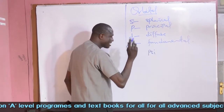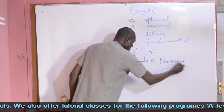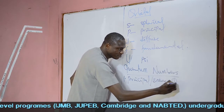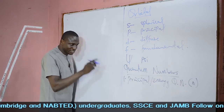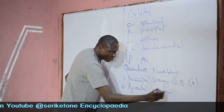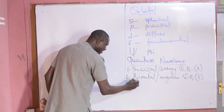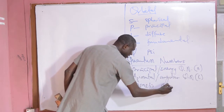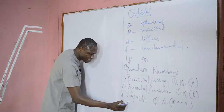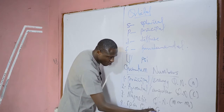Then we have four types of quantum numbers. The first type is the principal, also known as the energy quantum number, represented as small letter N. Then we have the azimuthal or angular, also known as subsidiary quantum number, represented as small letter L. The third quantum number is magnetic, represented as M, or in some texts you see it as M subscript small letter L. And fourth, we have the spin quantum number, represented as S or MS.